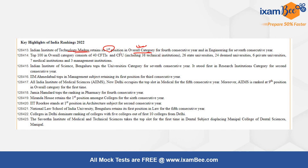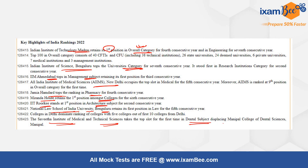In the rankings: IIT Madras topped the overall category. Indian Institute of Science Bangalore topped the University category. IIM Ahmedabad topped Management, AIIMS New Delhi topped Medicine, Jamia Hamdard topped Pharmacy, Miranda House topped Colleges, IIT Roorkee topped Architecture, and National Law School of India University Bangalore topped Law. In Dental, Saveetha Institute of Medical and Technical Sciences topped for the first time, overtaking Manipal College.